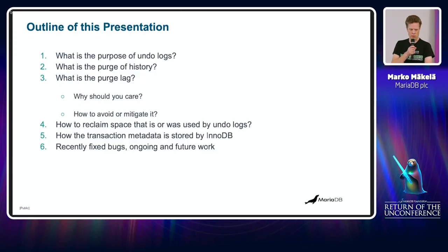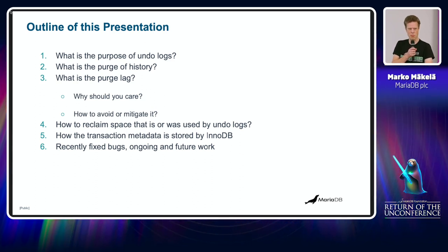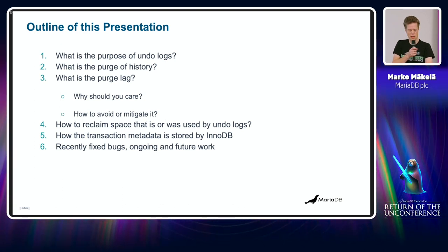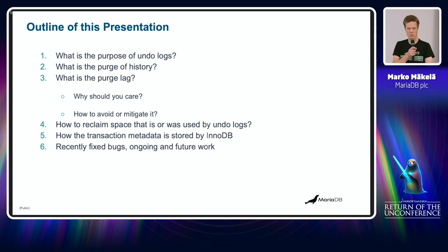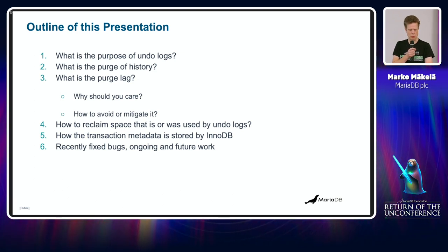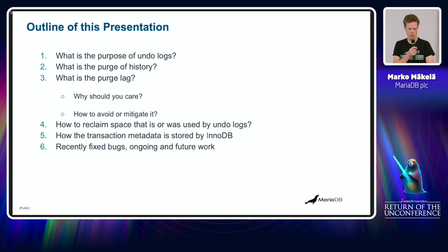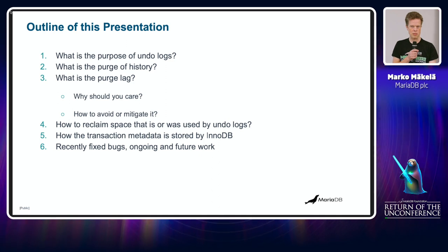The outline of my talk is: why do we have undo logs, what is the purge of history, and what is the purge lag? Why should you care about this and how can you avoid or mitigate this purge lag? How to reclaim the space used by undo logs, how transaction metadata is stored in InnoDB, and some recently fixed bugs and ongoing performance work.